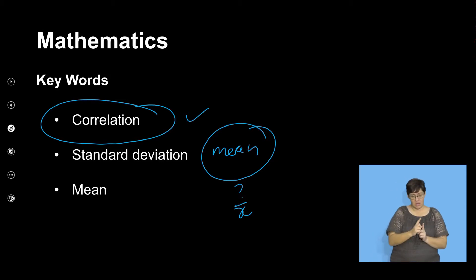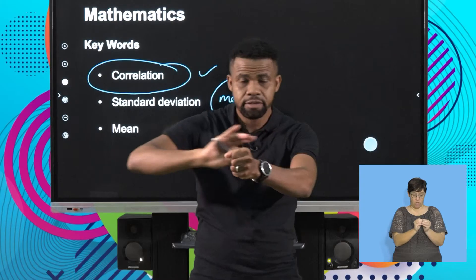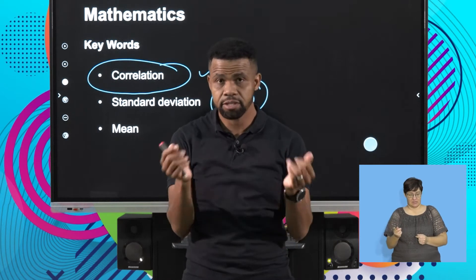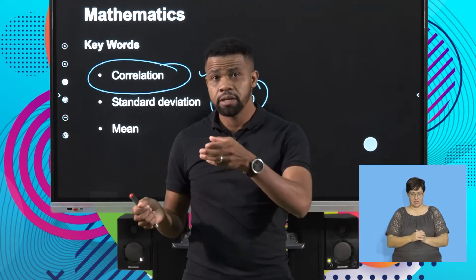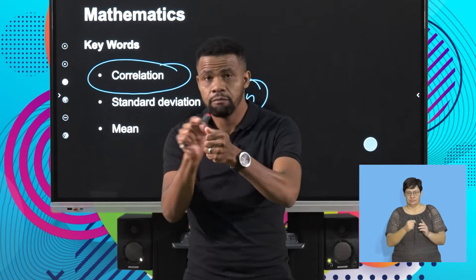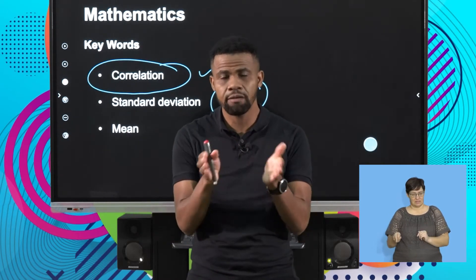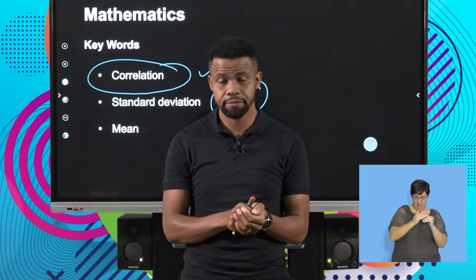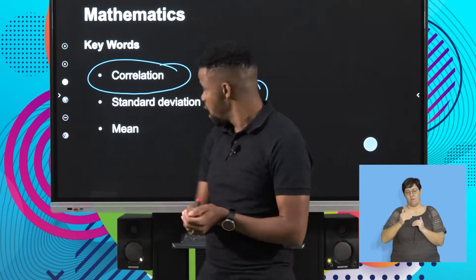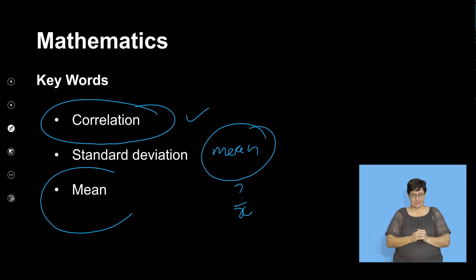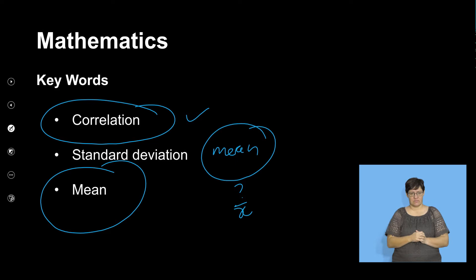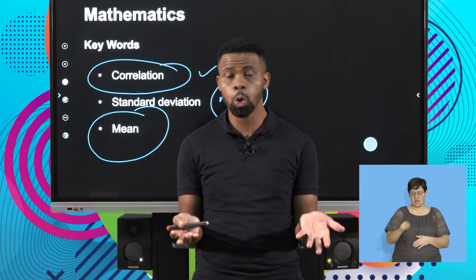If I have a set of data, the average is taking everything divided by how many numbers you have — that's the mean. But we have two different kinds of mean: grouped data and raw data. Raw data is data given like 1, 2, 3, 4, 5.